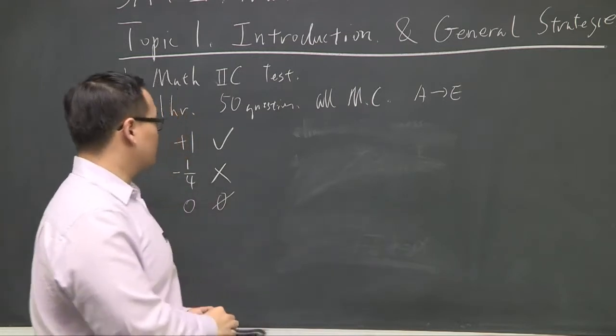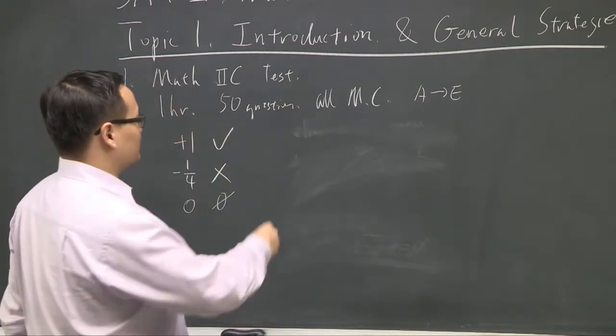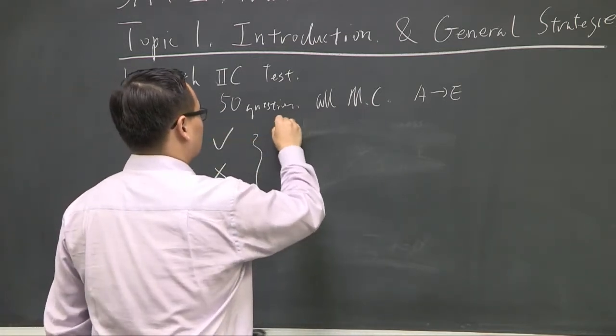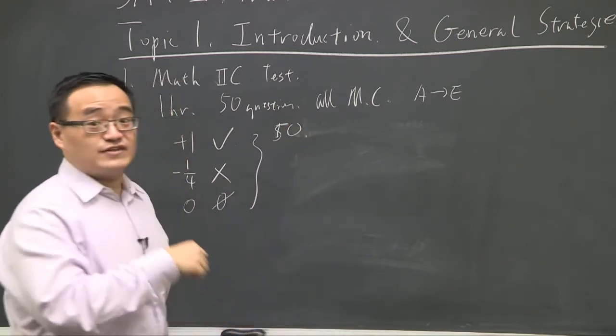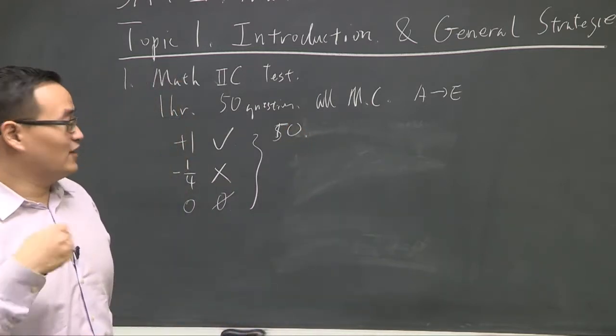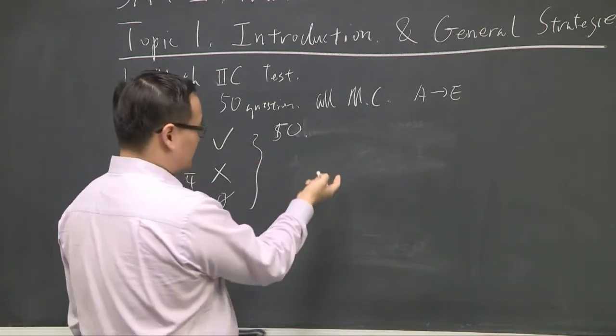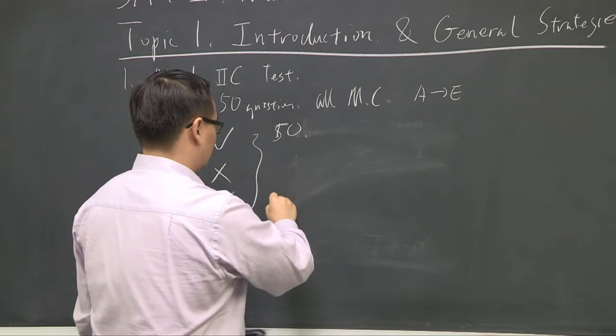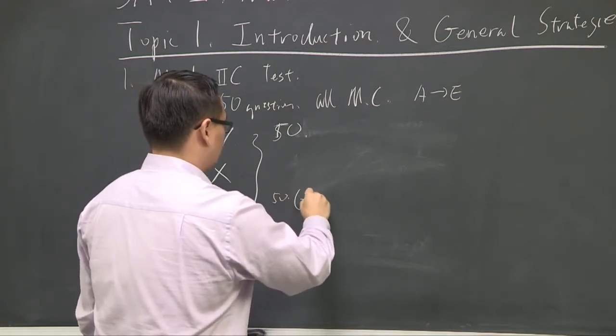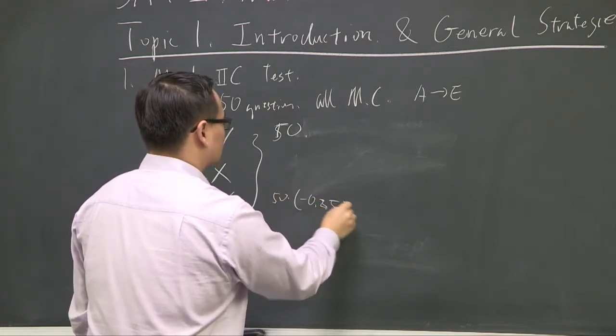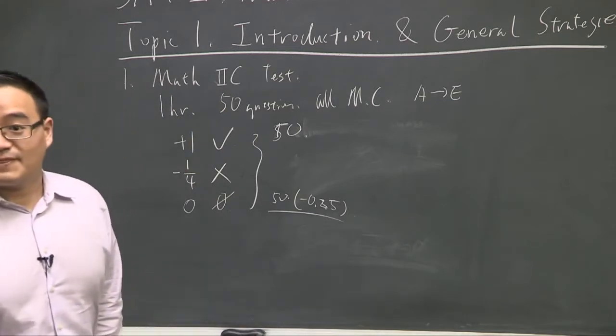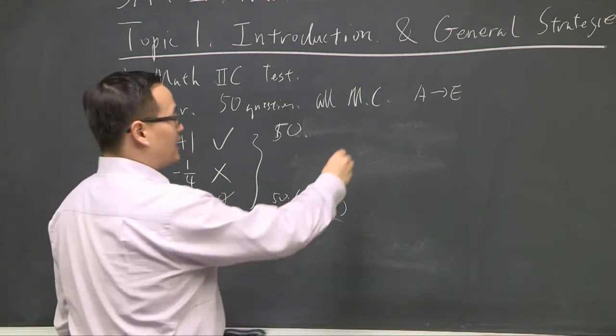So when you have, the maximum points you can get on this test is really 50 points. That's assuming you do everything right, right? And if you do everything wrong, you get every question wrong, you're going to get a quarter deducted by every point. And you're going to get 50 times negative 0.25. So you actually could end up with a negative raw score.